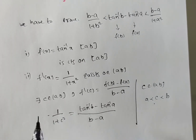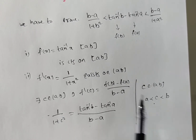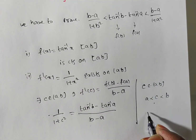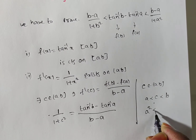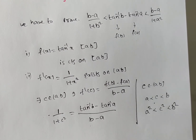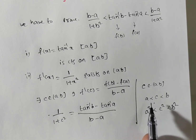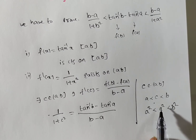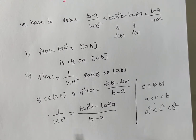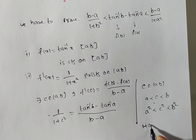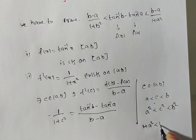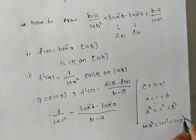Replace 1 by (1 plus c square) using the inequality. From a less than c less than b, squaring gives a square less than c square less than b square — no sign change. Then adding 1: 1 plus a square is less than 1 plus c square is less than 1 plus b square.